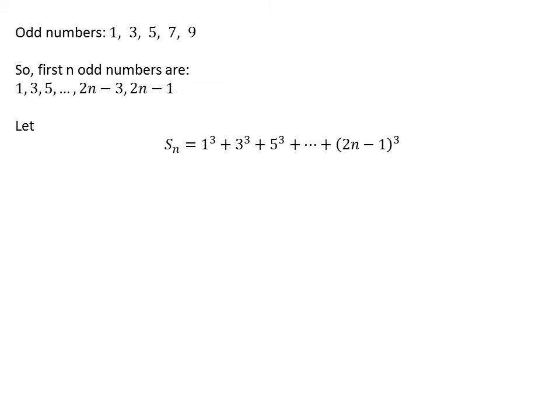Let Sn denote the sum of cubes of the first n odd numbers. If we add a number and subtract the same number from the sum, the sum remains the same. So, let us add and subtract the cubes of the first n even numbers.